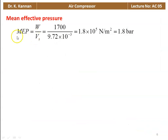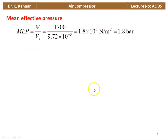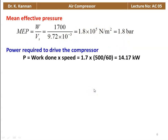Mean effective pressure MEP = work done / stroke volume = 1700 N·m / 9.42 × 10⁻³ m³ = 1.8 × 10⁵ N/m², or 1.8 bar. Power required to drive the compressor: P = W × N = 1.7 kN·m × (500/60) = 14.17 kW.